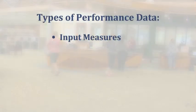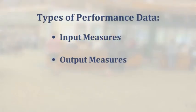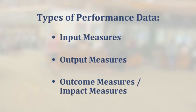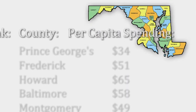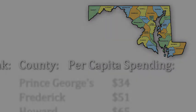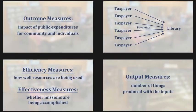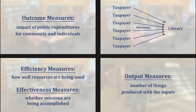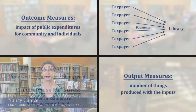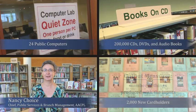Performance budgeting is the best way for libraries to tell their stories. There are three types of performance data used in describing what a library does: input measures, output measures, and outcome measures, also known as results or impact measures. To provide context to the numbers, it's helpful to translate them into per capita and time series calculations, or other forms to which decision makers can relate. Anne Arundel County Public Library and Burlington Public Library will share their performance data with you.